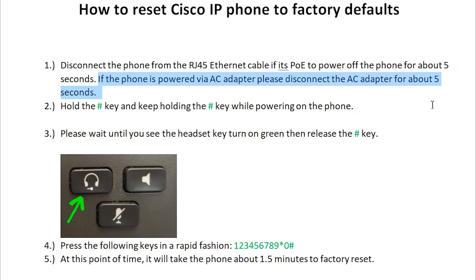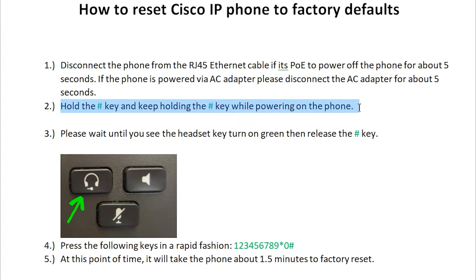With the phone in the off state, we're going to hold down the hash key, and keep holding it down while we actually power on the phone. This part might be a little bit tricky and you may need to use both hands — one hand holds the hash key, and the other plugs in the RJ45 cable if it's PoE-based, or plugs in the AC adapter if it's using an AC adapter.